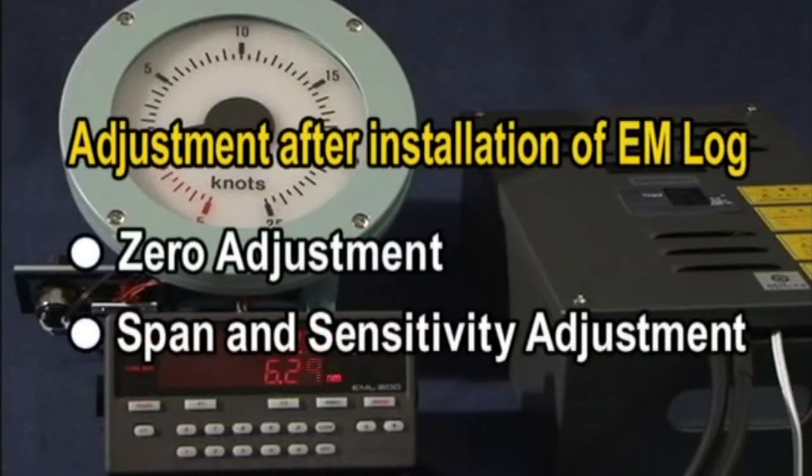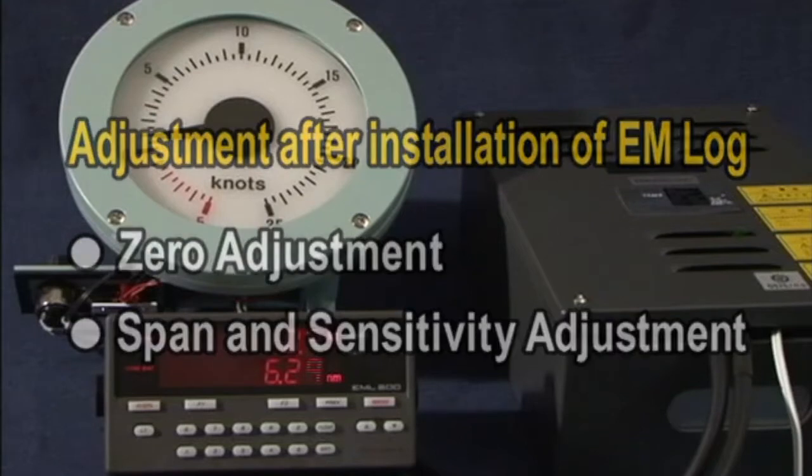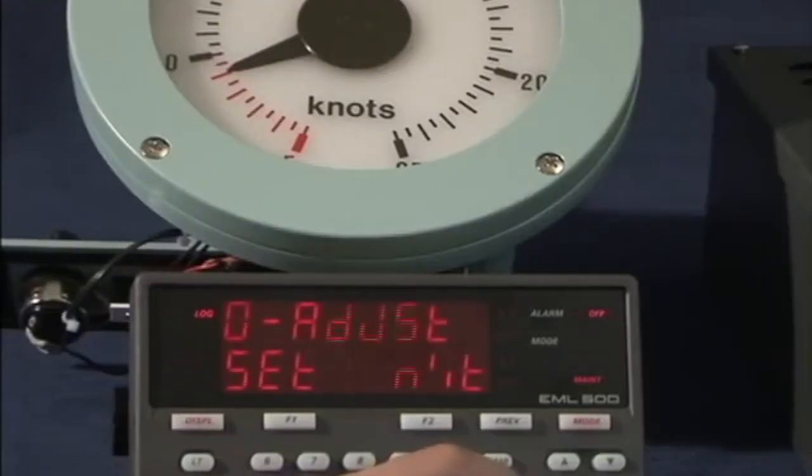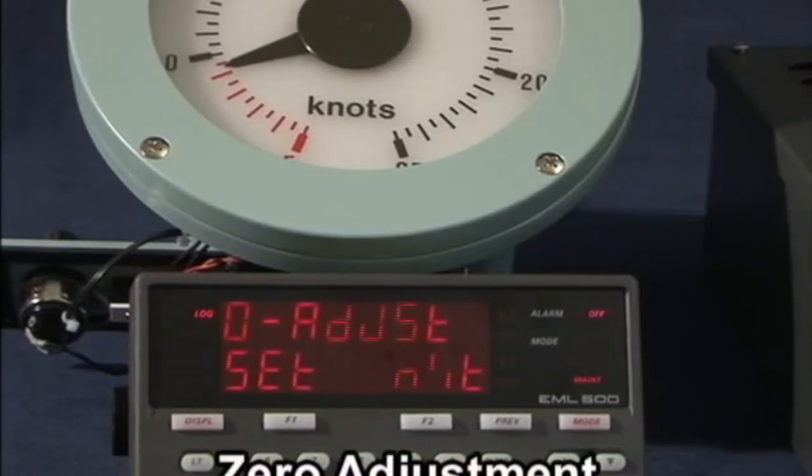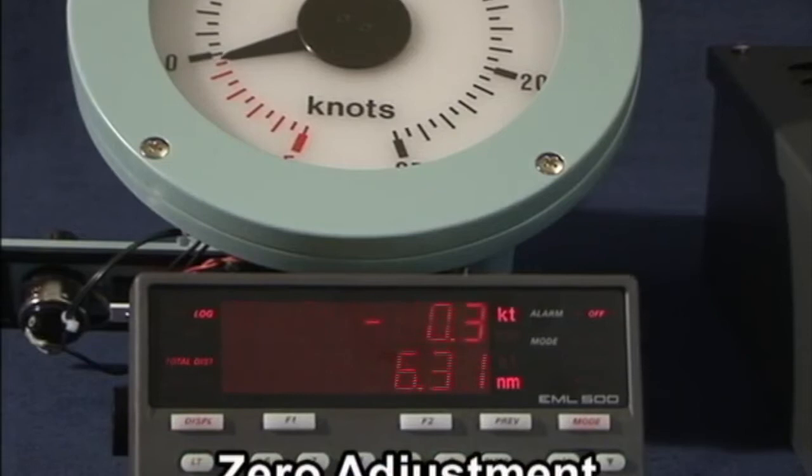Main adjustment items for the EM log are zero point adjustment, span adjustment and sensitivity adjustment. Zero point adjustment is conducted when the zero point of the sensor itself is changed, such as when the sensor is replaced. This adjustment is made when the ship speed is zero, that is, at anchor.